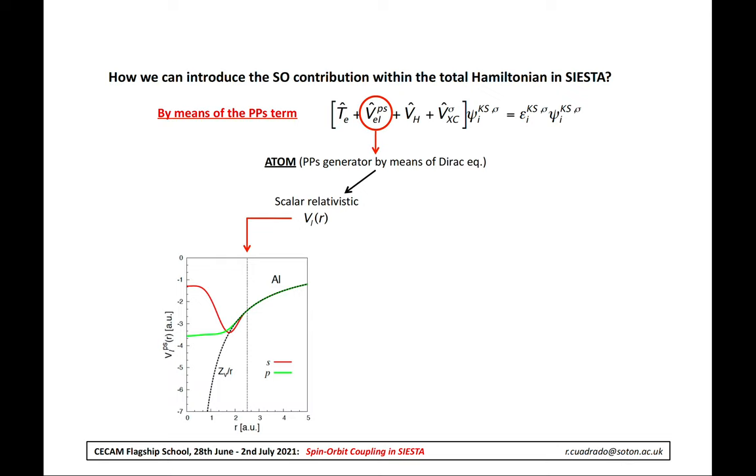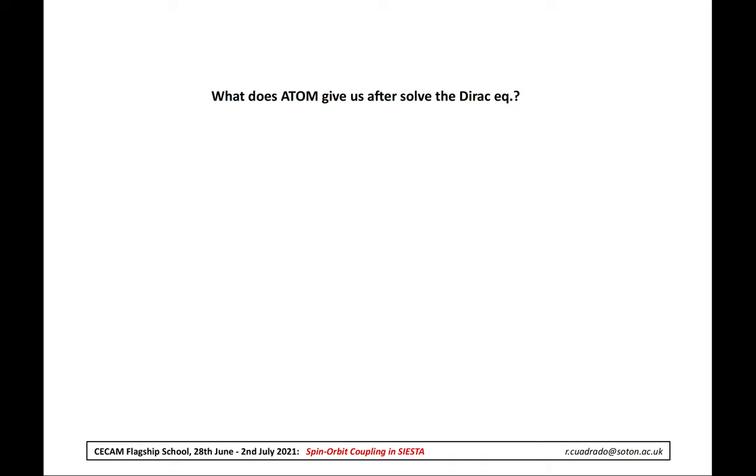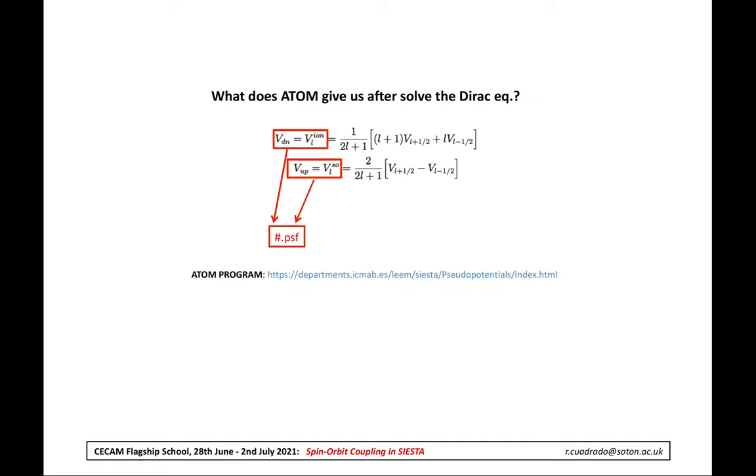Instead of solving the Schrödinger equation, ATOM can also solve the Dirac equation and in this case there would be, for each L-quantum number, two states. For example, for gold on the right side, each L-state is now split into two curves, L plus one-half and L minus one-half. These two radial functions are not given directly by ATOM. Instead, they are given as a linear combination and they are called in the PSF files V-down and V-up.